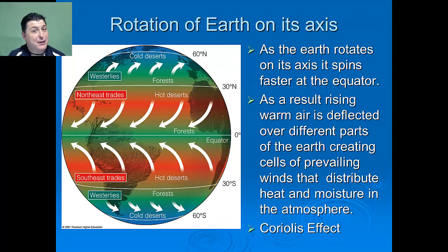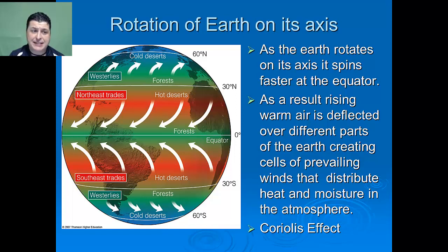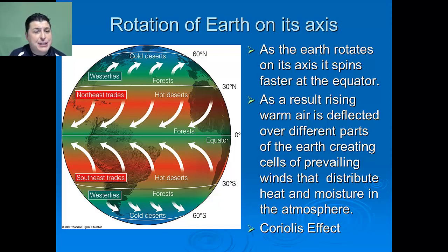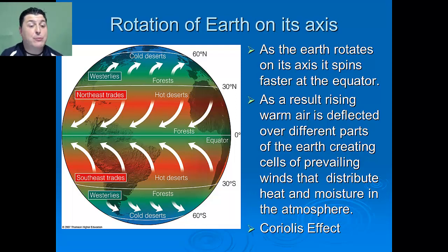Another characteristic which influences Earth's climate is the rotation of the Earth on its axis. As the Earth rotates on its axis, it actually spins faster at the equator. As a result, the rising warm air is deflected over different parts of the Earth, creating cells of prevailing winds that distribute heat and moisture in the atmosphere. This is referred to as the Coriolis effect.